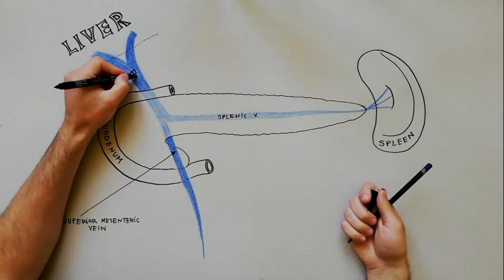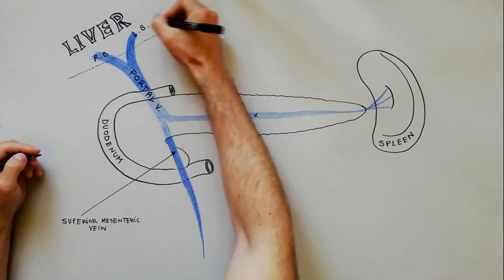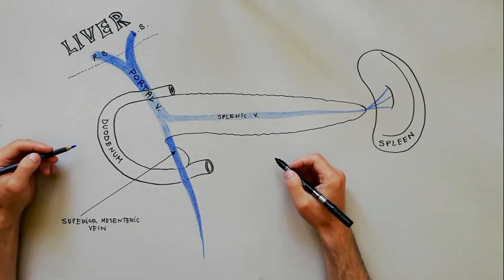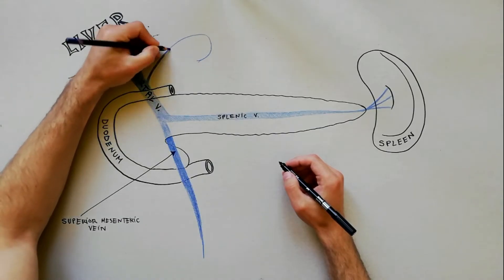The portal vein ends by dividing into right and left branches that enter the porta hepatis. Directly into the portal vein are draining the following veins.